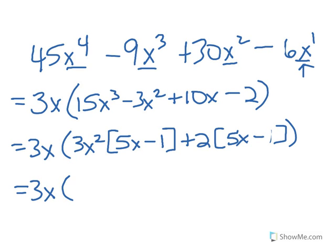We have 3x. Now these two terms inside the parentheses have 5x minus 1 in common, and the remaining factors are 3x squared plus 2. That's how you factor this.